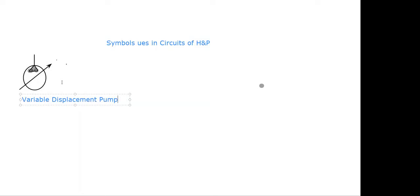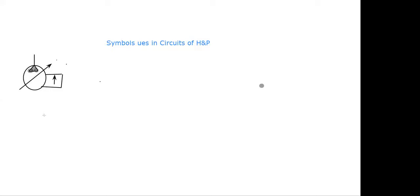If we want to make it a pressure compensated pump, then we have to add some additional equipment. This is the symbol for pressure compensated pump. When we want to adjust the pressure using this valve, we use this pressure compensated pump. This is the pump having the facility to compensate — meaning to increase or reduce the pump output.